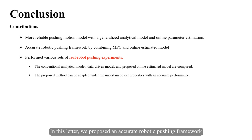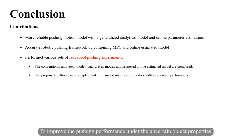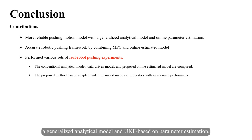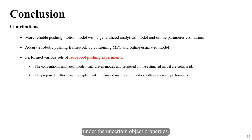In this letter, we proposed an accurate robotic pushing framework using an online estimated model to push objects under uncertain object properties. To improve pushing performance, we suggested a more reliable pushing motion model combining a generalized analytical model and unscented Kalman filter-based online parameter estimation. We performed various real robot pushing experiments and showed that the proposed framework outperformed two MPC-based robotic pushing framework baselines under uncertain object properties.